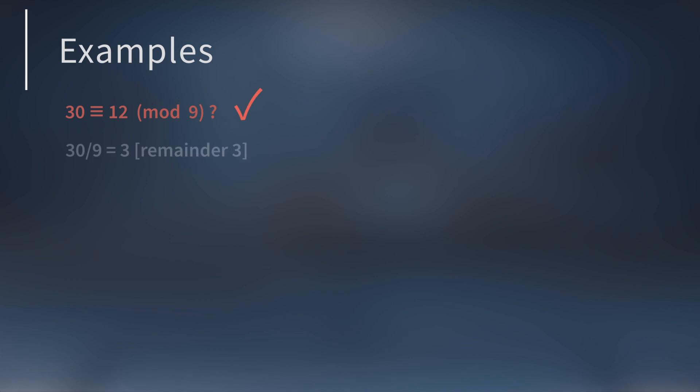Let's look at some congruences and determine if they're true or false. Is 30 congruent to 12 mod 9? Yes. When you divide 30 by 9, you get a remainder of 3, and the same goes for 12.